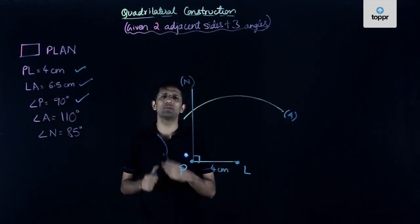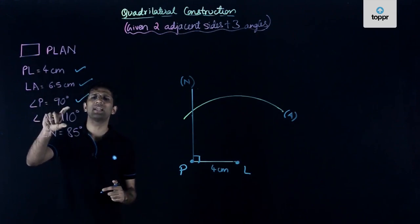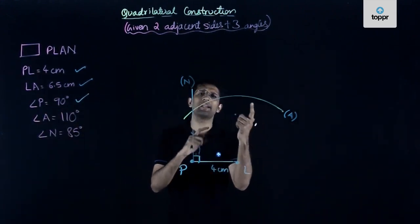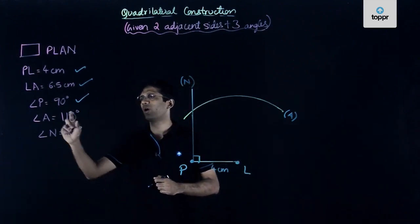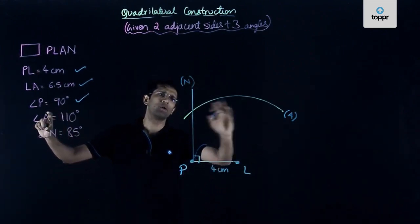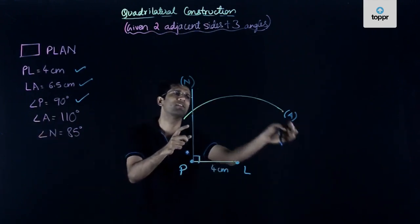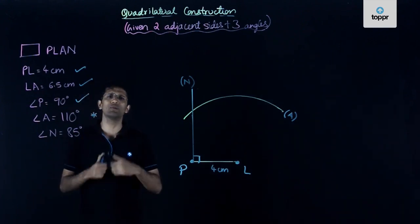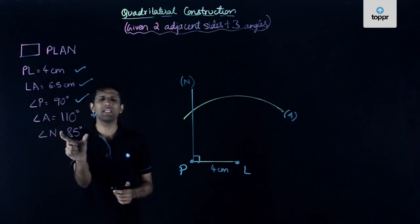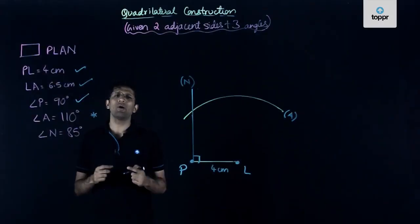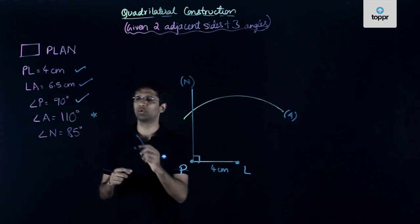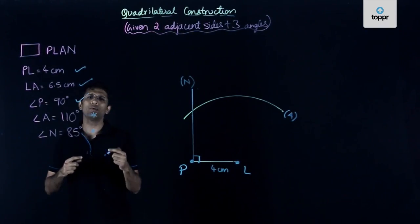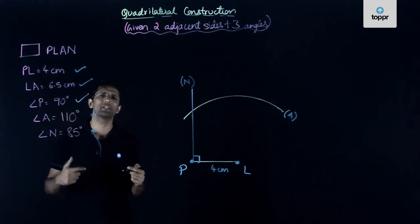We have been given that measure of angle A is 110 degrees, so we need an angle that measures 110 degrees. However, we do not have the exact position of point A — we only know that it lies somewhere on this arc. So for now, we will not use this piece of information and move to the next. We have angle N equals 85 degrees, but we do not have the exact location of point N either, so this information cannot be directly used.